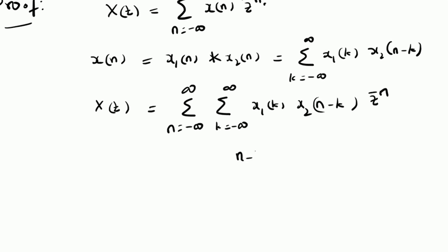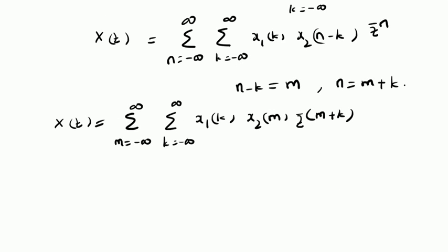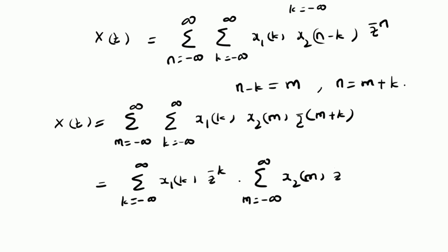The next step is to replace n minus k with m, and n with m plus k. Therefore, the summation becomes: m runs from minus infinity to plus infinity, and k runs from minus infinity to plus infinity. We have X1 of k, X2 of m, where n minus k is replaced by m, and Z to the power minus n is replaced by Z to the power minus of m plus k.